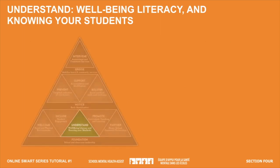This piece of the Tier 1 triangle speaks to understanding — knowing your students and knowing enough about mental health to be able to actively promote it and to recognize when a student may be struggling with a problem in this area. Think about your classroom this year: what are some ways that you work to really know your students? Would you be able to detect changes in behavior that might be associated with a mental health problem?